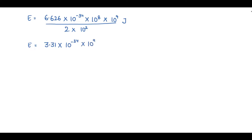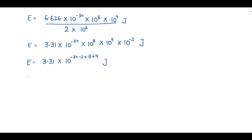Adding the powers: negative powers are −34 − 2 = −36, and positive powers are +8 + 9 = +17. So −36 + 17 = −19. Therefore, energy of one photon E = 3.31 × 10⁻¹⁹ joule.